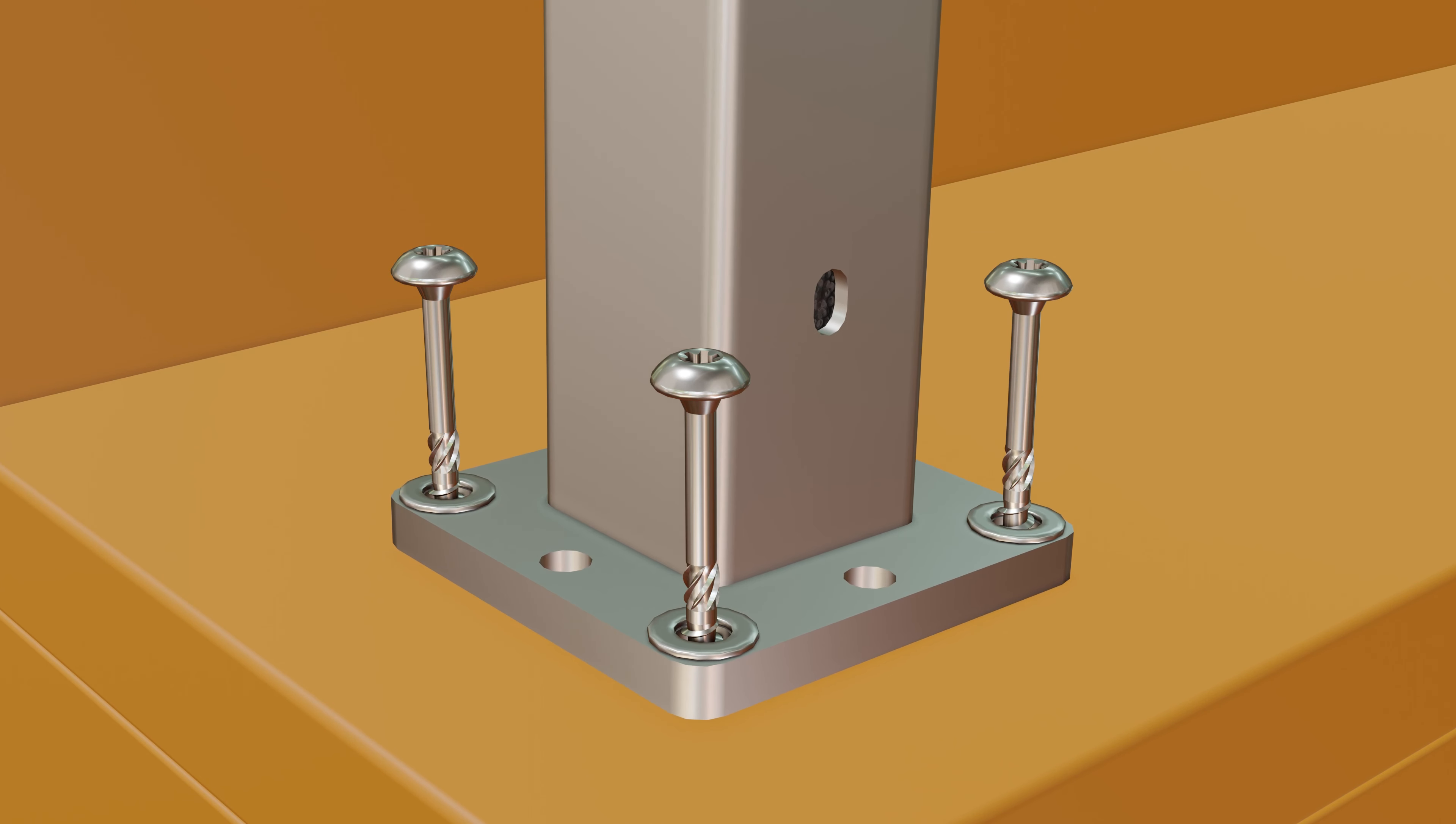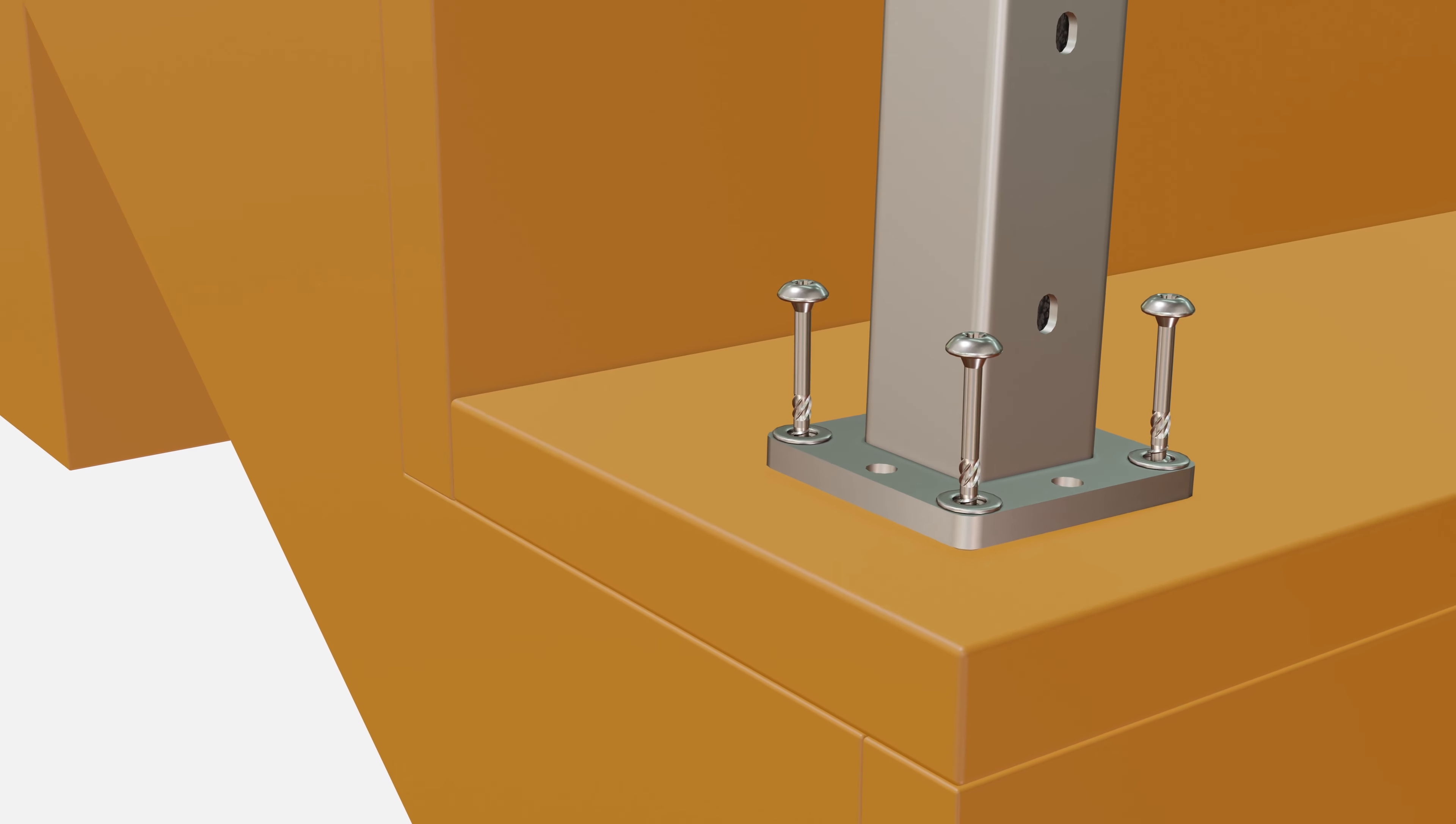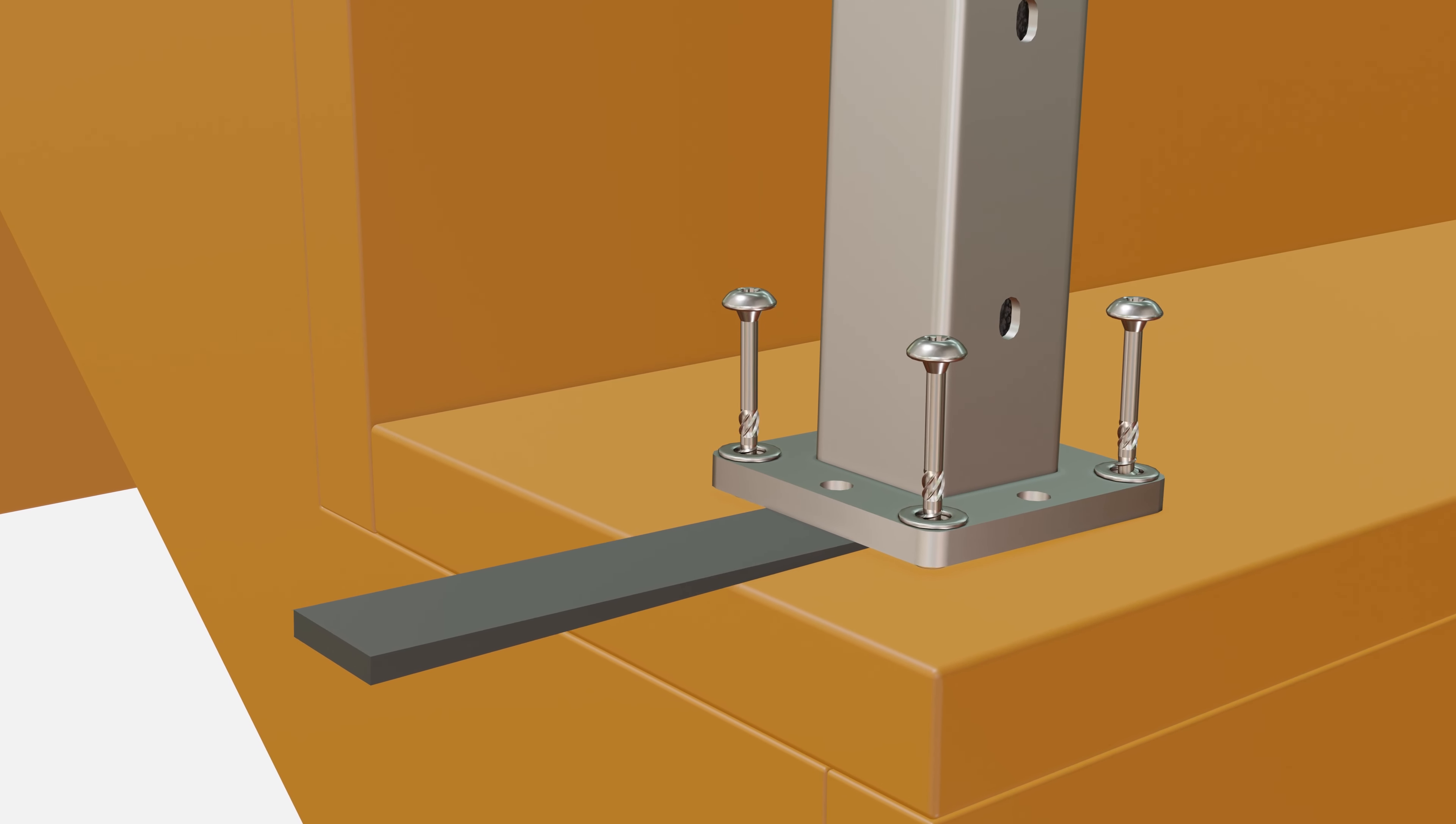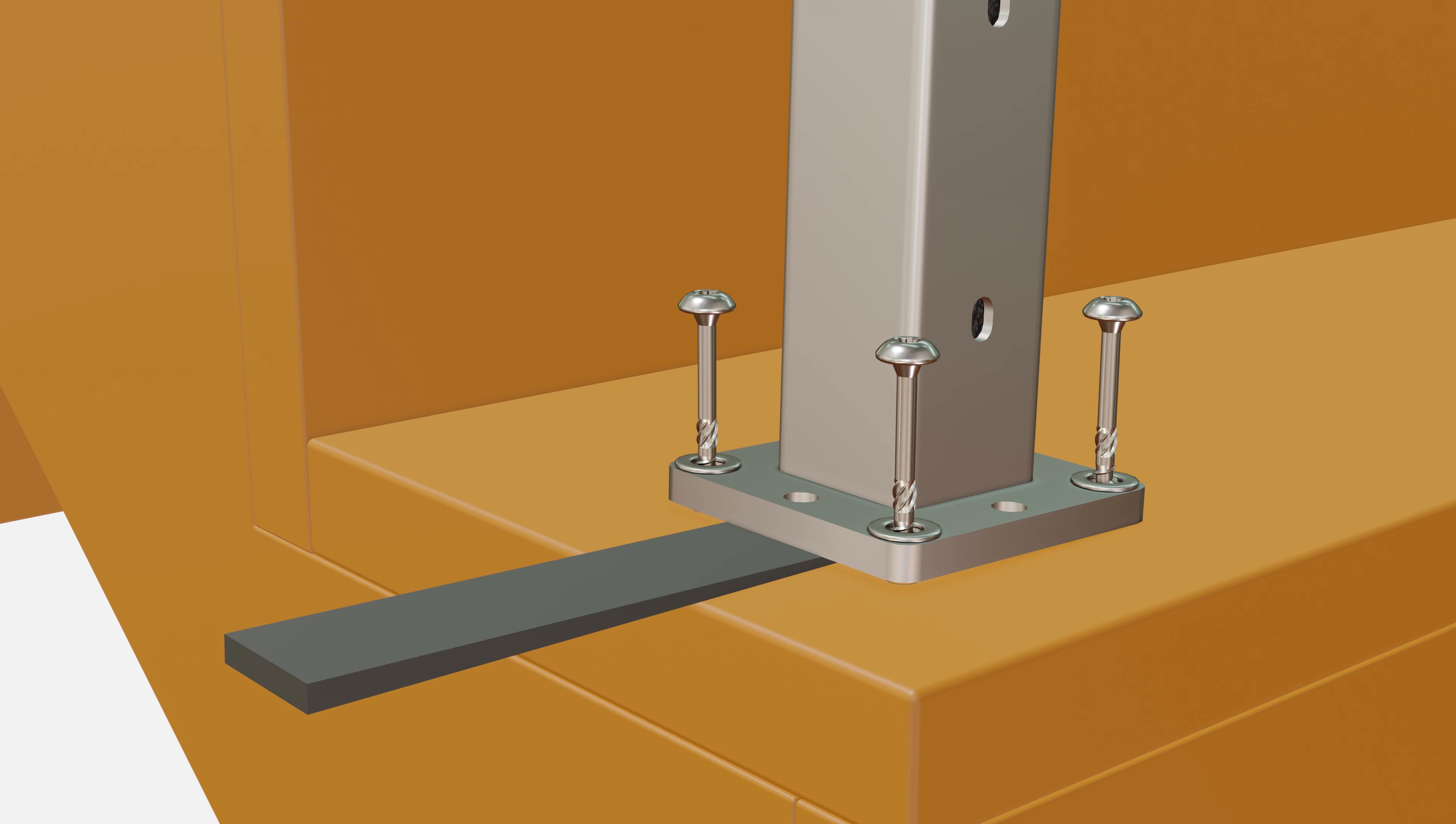If the post is out of level, loosen the screws and use the composite shims to help level the post. During this stage, remember that the post must be level both left and right as well as front and back. When your post is shimmed to the correct level, fasten down your screws.